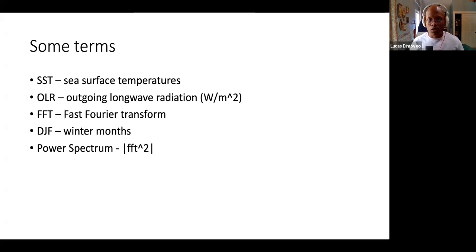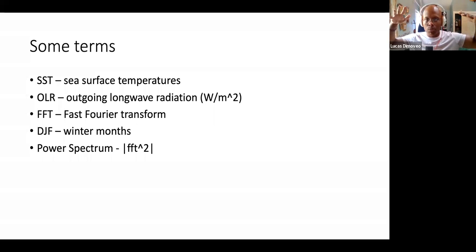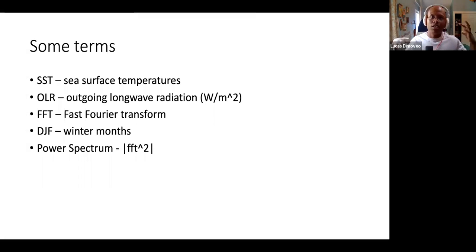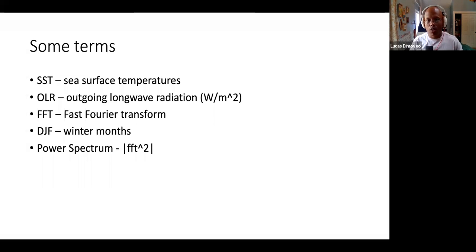SST is sea surface temperatures. OLR is outgoing longwave radiation — infrared radiation coming off the surface of the Pacific Ocean, measured by NOAA satellite. That's where we got our time series data, and it's in watts per meter squared. FFT is the fast Fourier transform, which basically takes our physical data and turns it into Fourier space — similar to what you'd see when working with audio, with power and frequency. DJF are the 90 days from December 1st to March 1st. The power spectrum is the absolute value of our fast Fourier transform output.